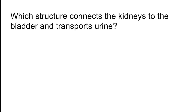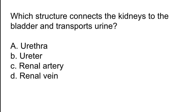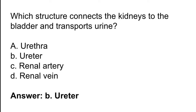Which structure connects the kidneys to the bladder and transports urine? Options: A) Urethra, B) Ureter, C) Renal artery, D) Renal vein. The correct answer is option B. The ureter connects the kidneys to the bladder and transports urine.